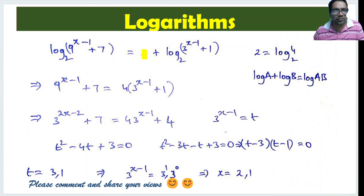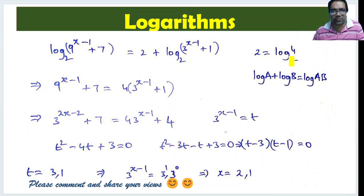So what is 2 in logarithmic form? 2 equals log base 2 of 4, because 2 squared equals 4. So log base 2 of 4 is actually equal to 2. We can write this 2 as log₂(4).